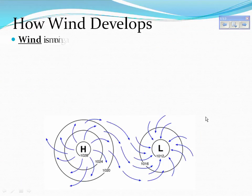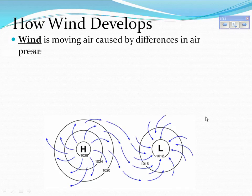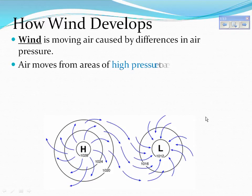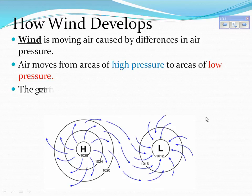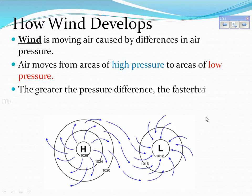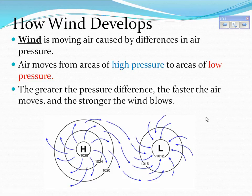How winds develop: wind is the moving air caused by differences in air pressure. Air moves from areas of high pressure to areas of low pressure. The greater the pressure difference, the faster the air moves and the stronger the winds blow.